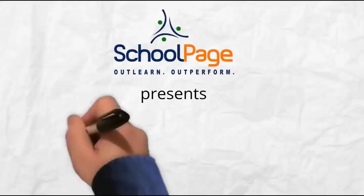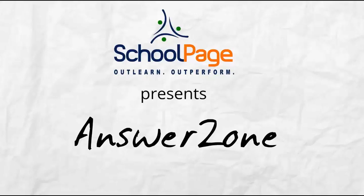Welcome to School Page Answer Zone. Here is your question from Chemistry on Empirical Formula. The empirical formula of a compound is Option A.